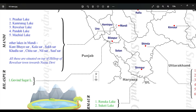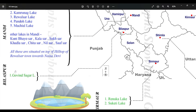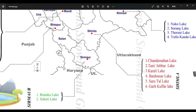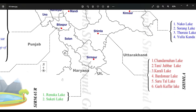All these lakes with the suffix 'Sir' are located on the top of Rewalsar town towards Naina Devi, somewhere in this range. Now let's discuss lakes in District Bilaspur. Govind Sagar Lake is an artificial lake, formed after the construction of Bhakra Dam on River Sutlej.